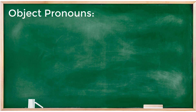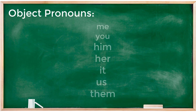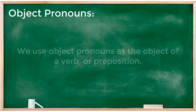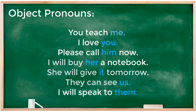The second type of personal pronoun is object pronouns. We use object pronouns as the object of a verb or preposition. For example: 'You teach me' — me is the object of the verb. Other examples: 'I love you', 'Please call him now', 'I will buy her a notebook', 'She will give it tomorrow', 'They can see us', 'I will speak to them'.